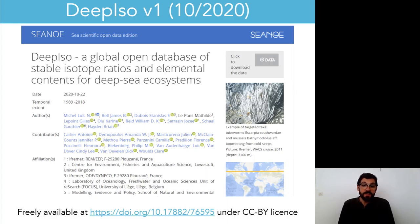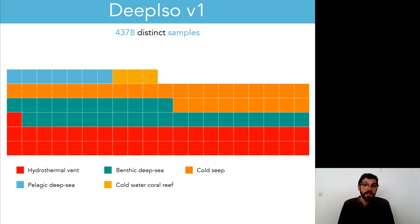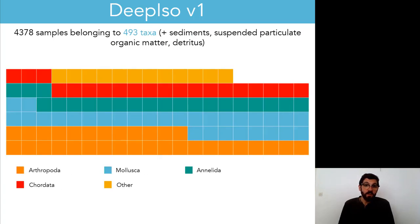You can download the database using the link that you see now on the screen if you want to have a look. It's under a CC BY license, and what you will find inside is about 19,000 measurements of seven parameters, mostly carbon and nitrogen isotopes, but also sulfur. Those measurements pertain to almost 4,500 distinct samples, mostly taken in hydrothermal vents, benthic ecosystems, or cold seeps. And those samples are linked with almost 500 different taxa, the bulk of which are crustaceans, molluscs, and polychaetes.